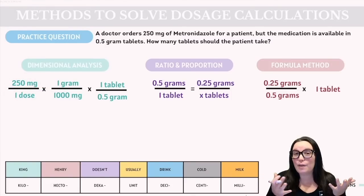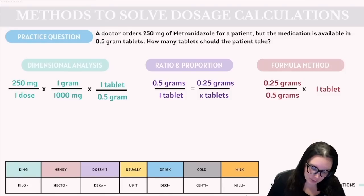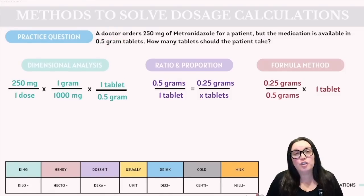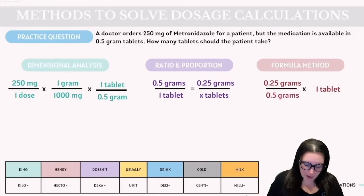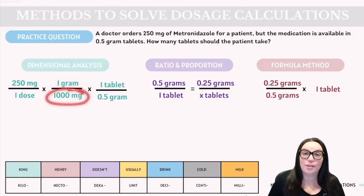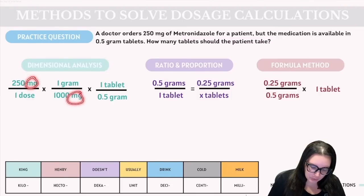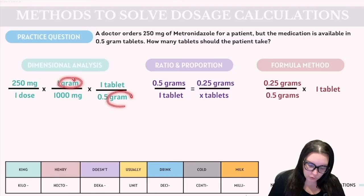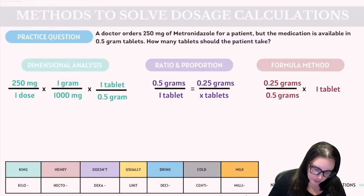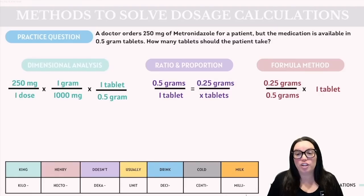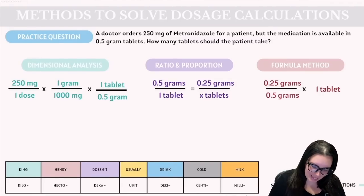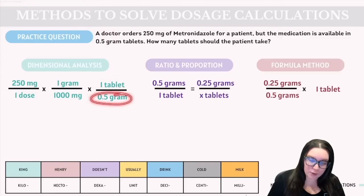Next, the available medication is 0.5 gram tablets, so we need to do a conversion between grams and milligrams. We know that one gram equals 1000 milligrams. When setting up your fractions, make sure the milligrams align and the grams align so they cancel each other out. For our last fraction, we have the volume over the dosage we have — in this case, one tablet equals 0.5 grams.